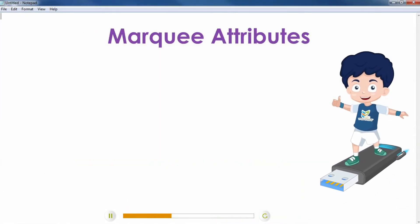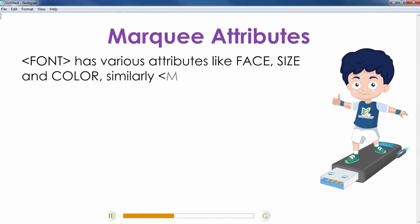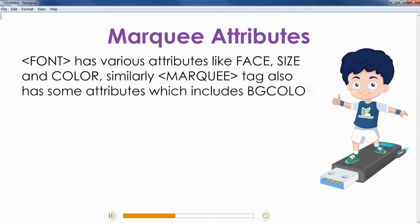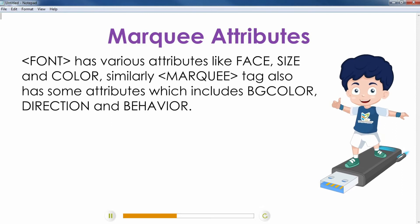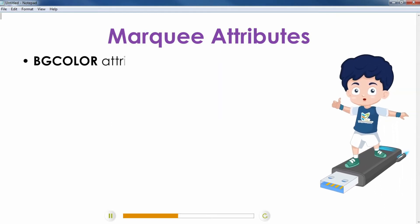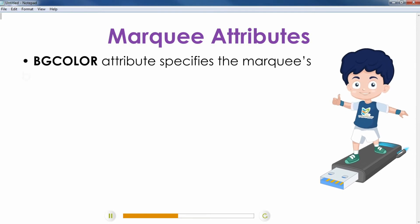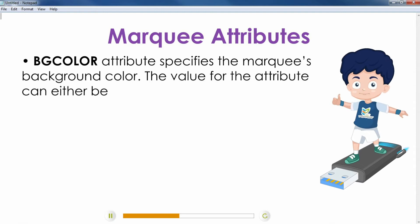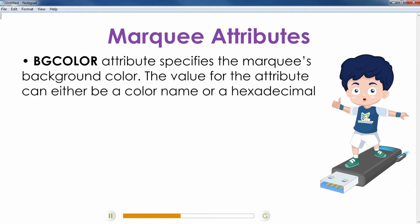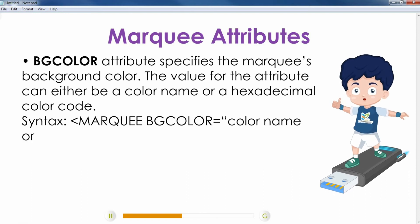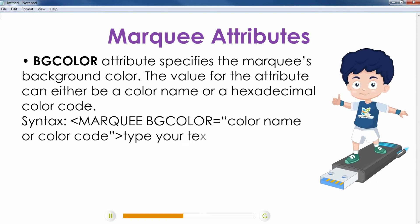Marquee Attributes: Font has various attributes like face, size, and color. Similarly, marquee tag also has some attributes which include bg color, direction, and behavior. BG Color attribute specifies the marquee's background color. The value for the attribute can either be a color name or a hexadecimal color code. Syntax: Marquee bg color equals color name or color code, type your text, slash marquee.